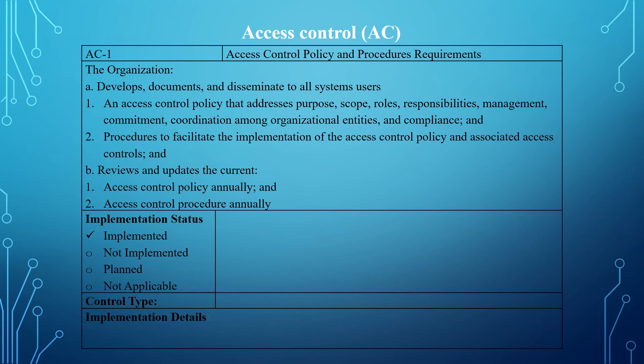For AC1, the implementation status requires you to determine whether the control is implemented, not implemented, planned, or not applicable. You have to determine which of these options applies. If it's implemented, you document it on the right-hand side. If it's not implemented, you also document it.